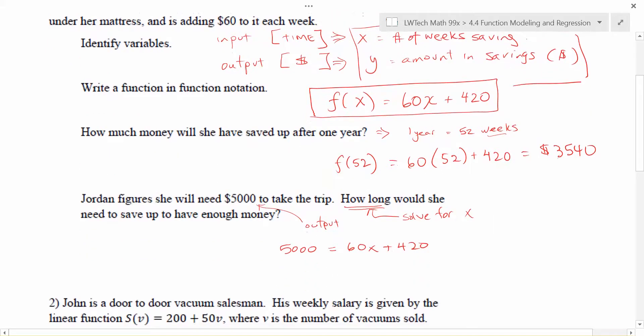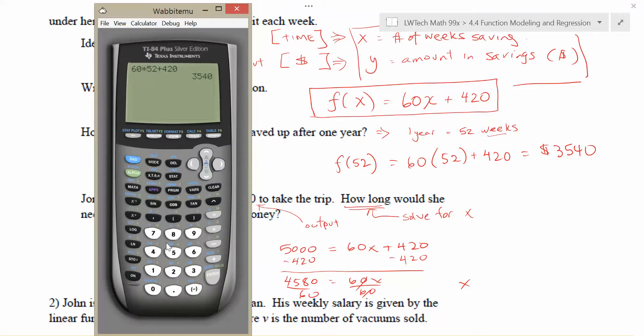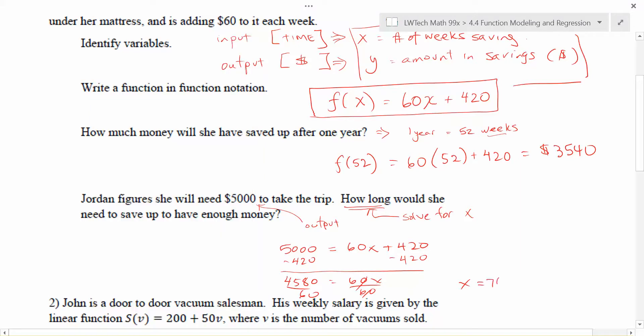And now it's just a simple linear equation that we can solve. Subtract 420 from each side gives me 4,580. Divide by 60 on each side. And let me do that. 4,580 divided by 60 gives me 76.33. So she would need to save for a total of 77 weeks in order to have enough money to go on her trip.